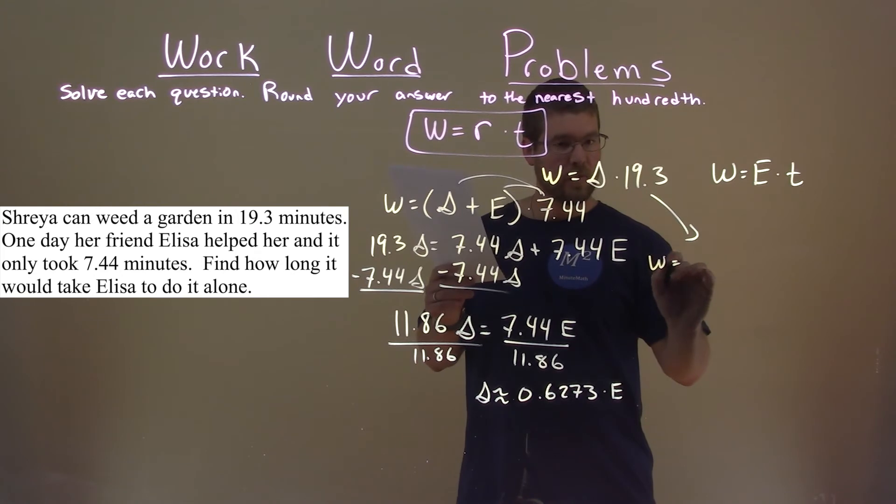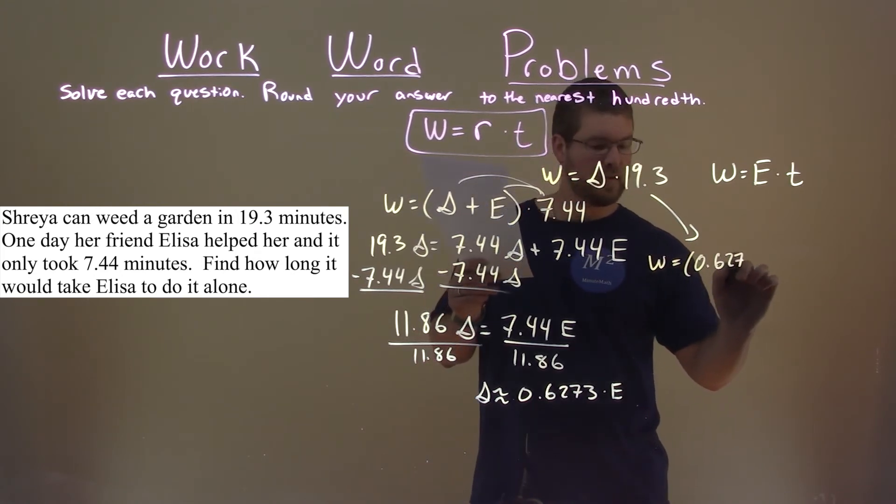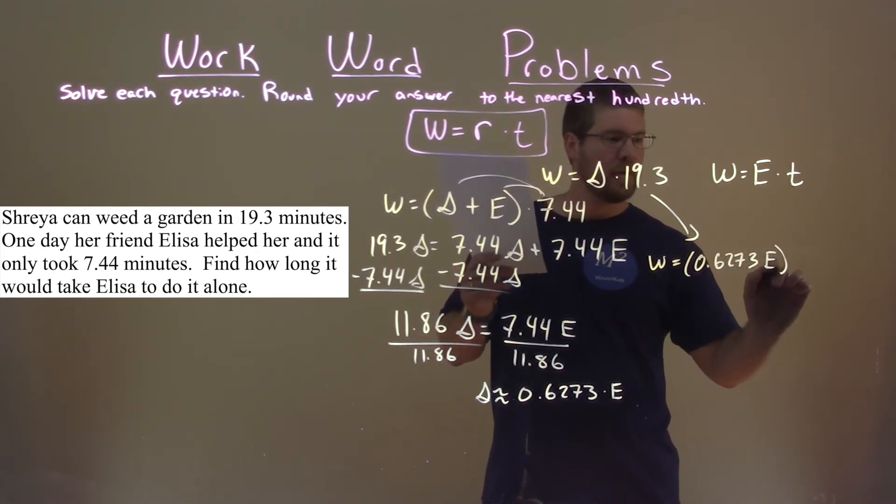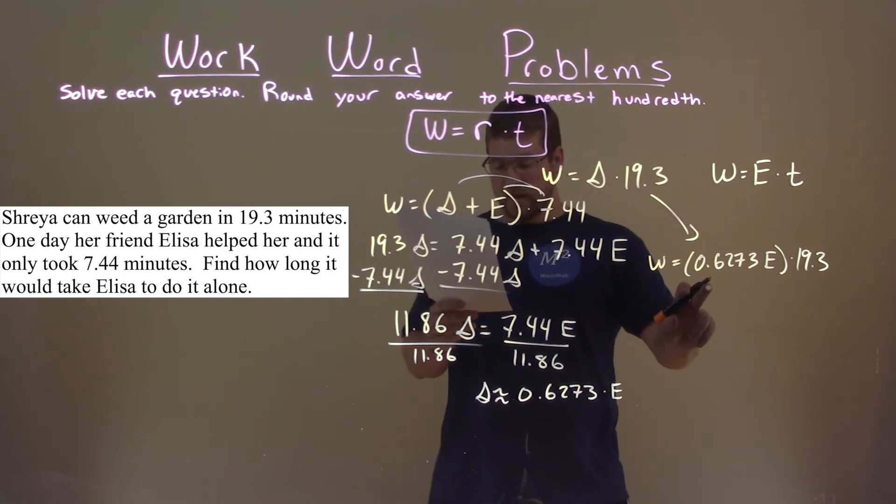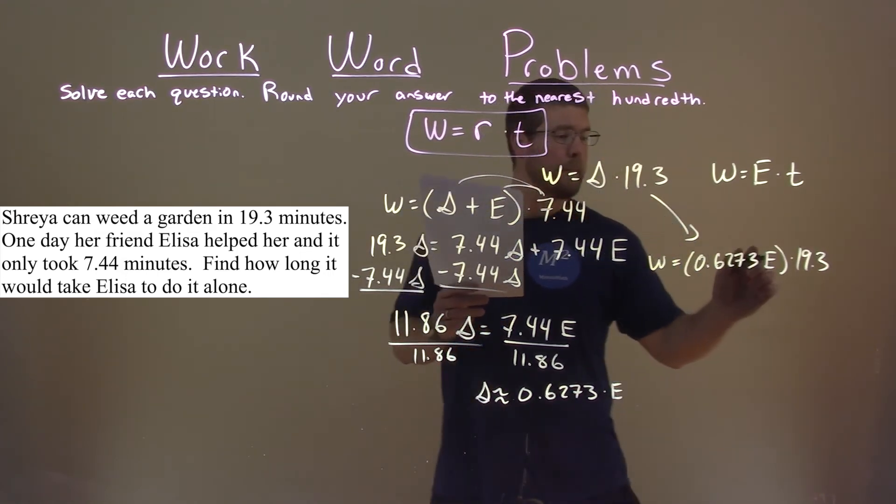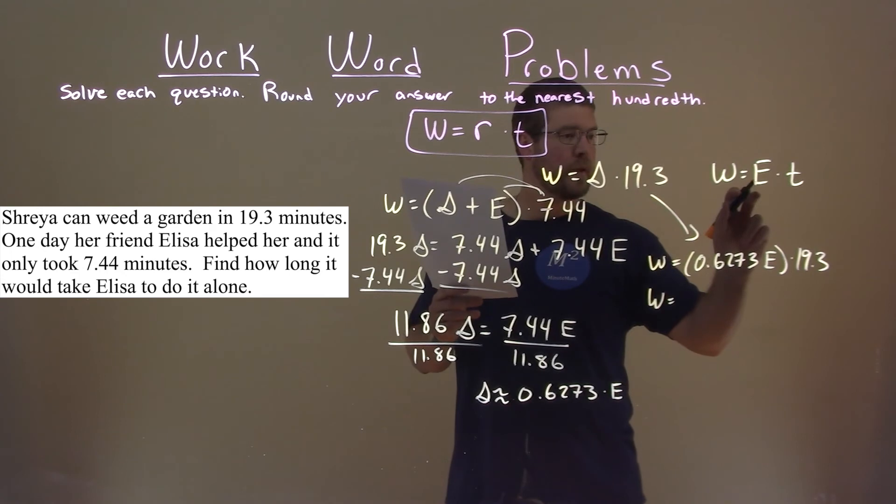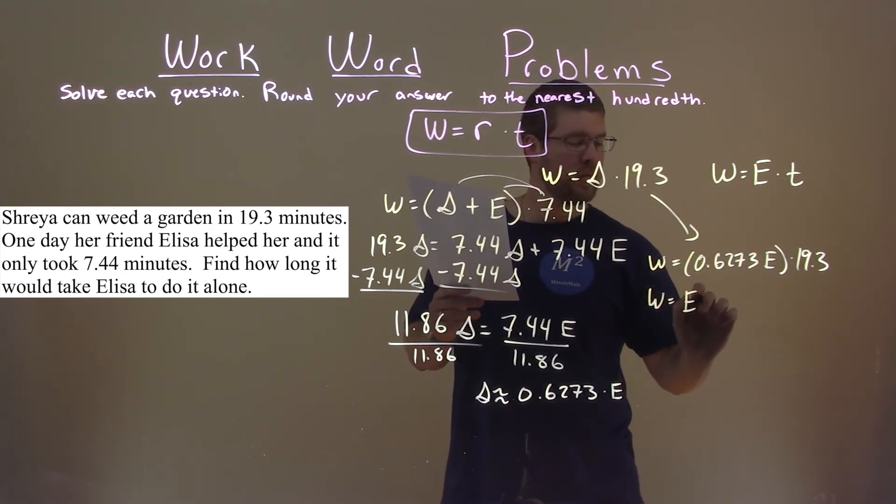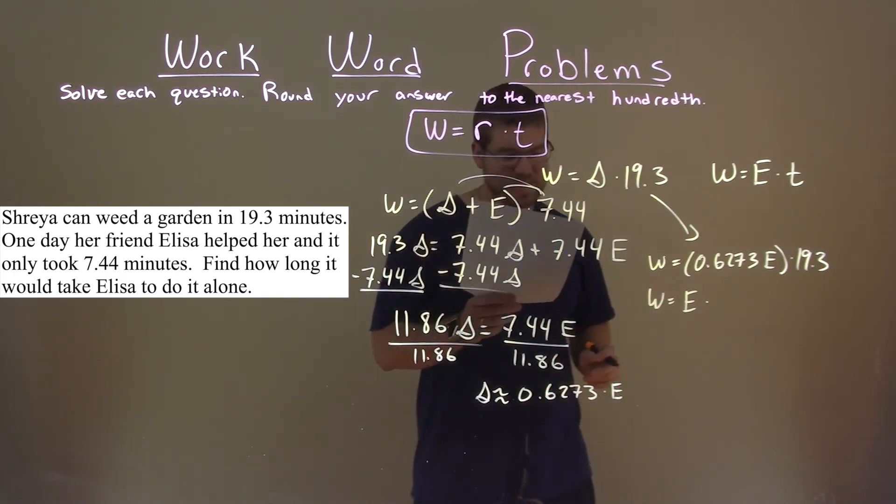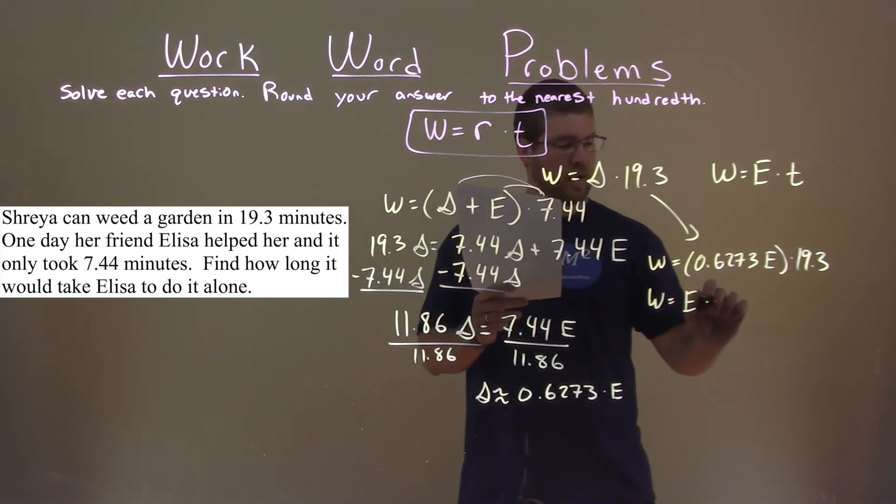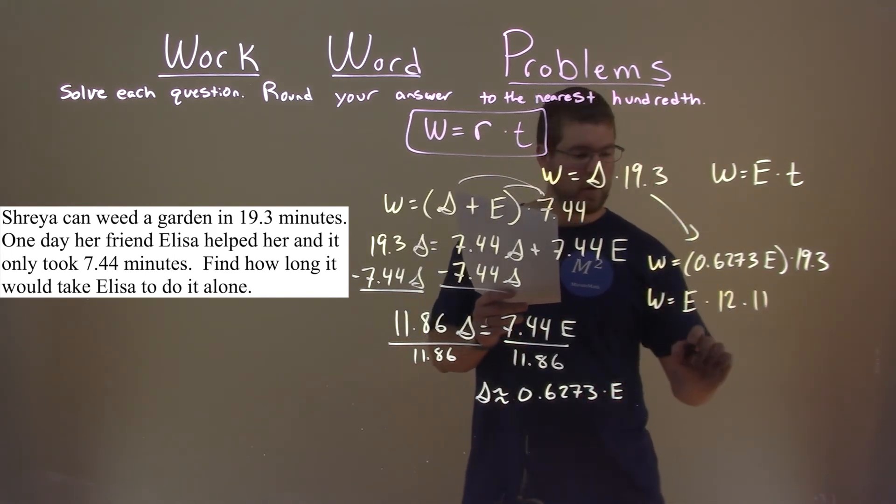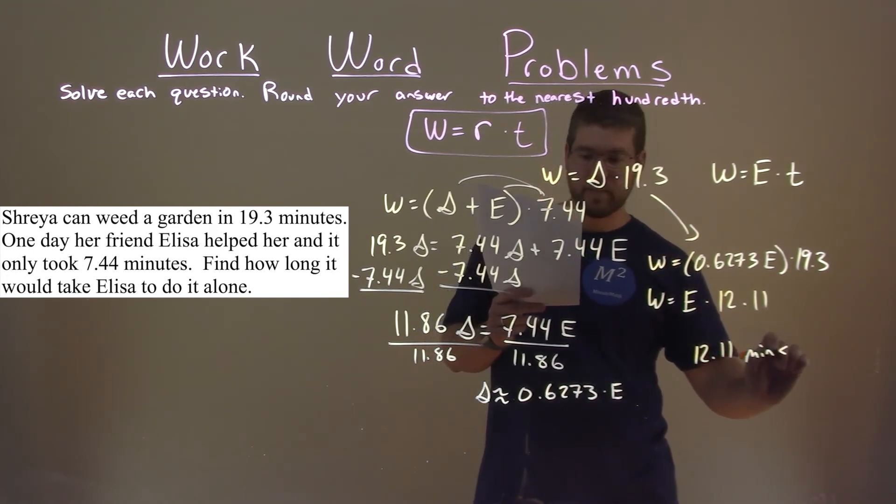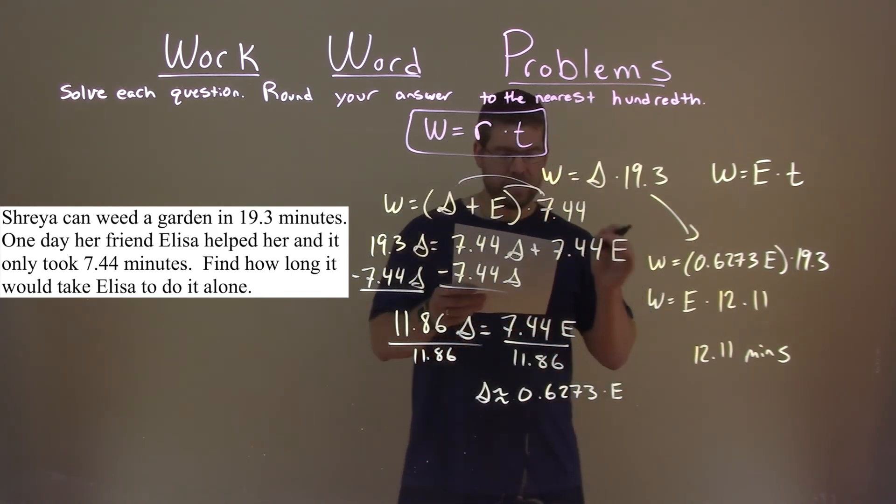So, that work equals, we're going to replace Shreya, again, 0.6273 E times 19.3. All right, that should be it. Okay. So, what do we do from here? We're going to reorder this, so it looks more like this formula. E comes first, and we can do that because it's all being multiplied. And what's 0.6273 times 19.3? That's 12.11. So, it takes Eliza 12.11 minutes to weed the garden by herself.